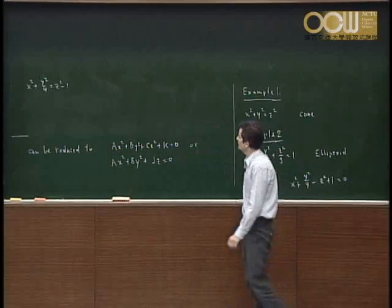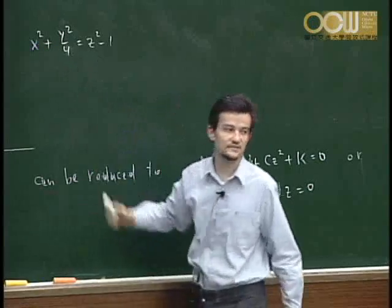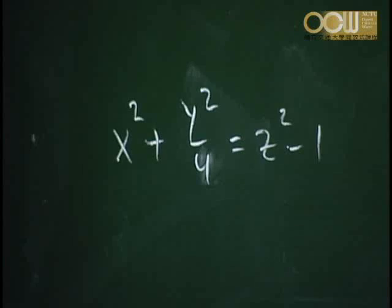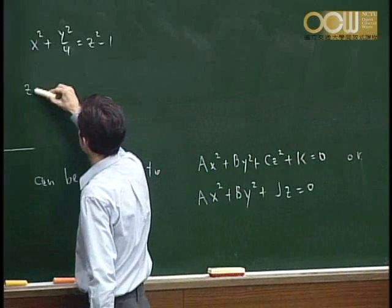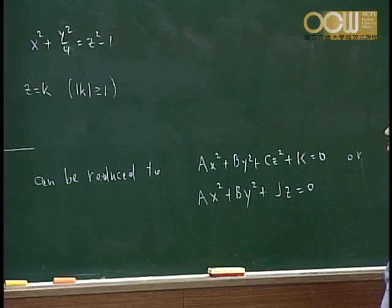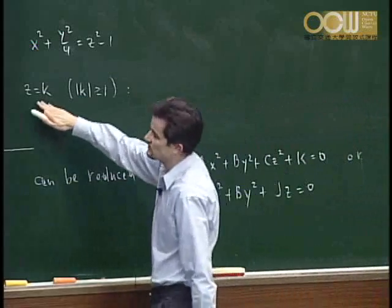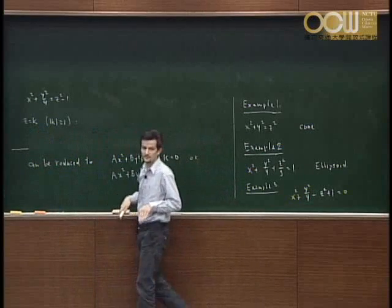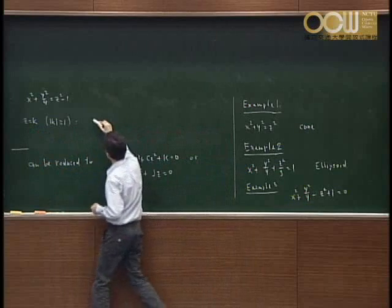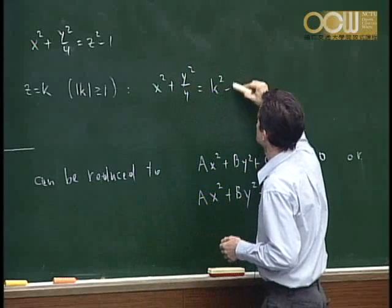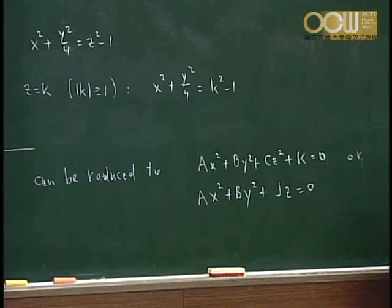If we look at cross-sections by fixing z equal to k — where |k| ≥ 1 — and slicing parallel to the xy-plane, we get x squared plus y squared over 4 equals k squared minus 1, so the cross-sections are ellipses.